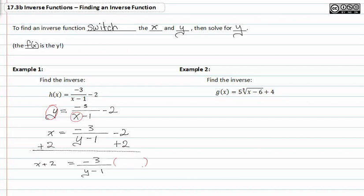Multiplying both sides of my equation by y minus one, I'm going to get y minus one times x plus two is equal to negative three.